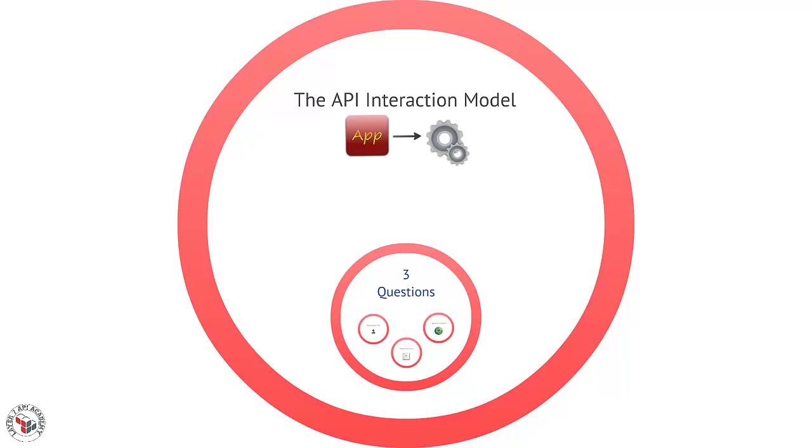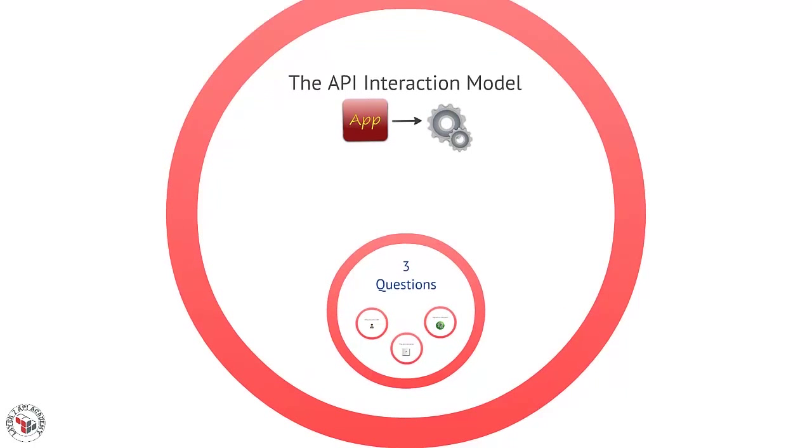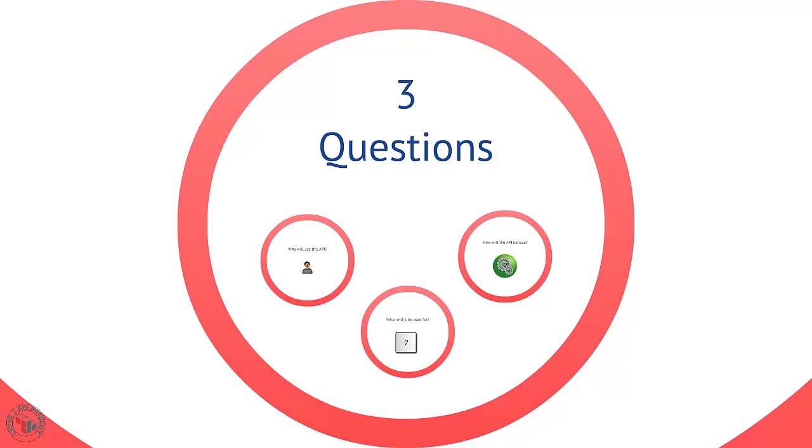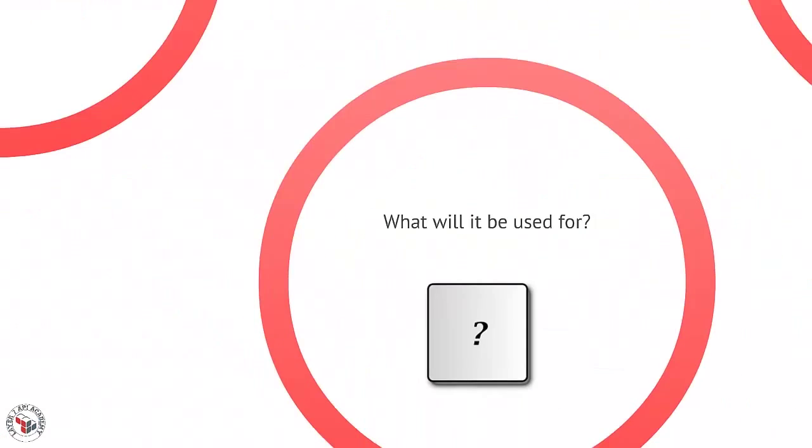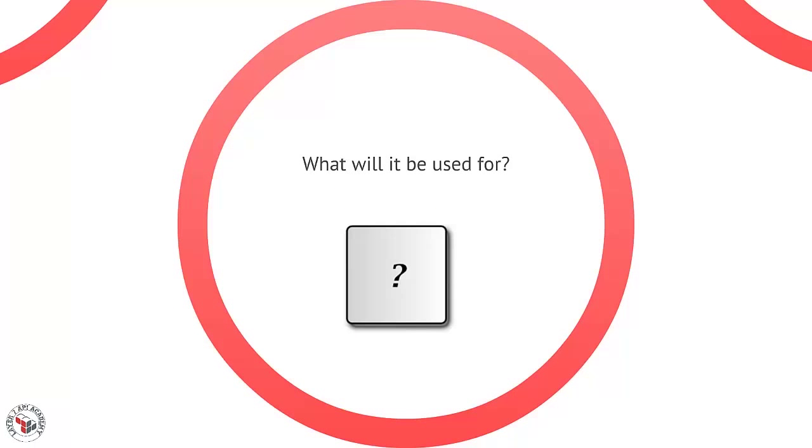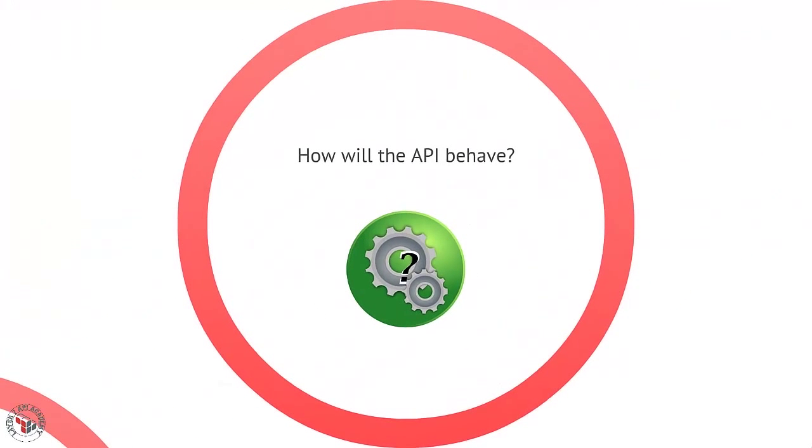To build an API interaction model, we need to ask ourselves three pretty simple questions. One, who will use this API? Second, what will it be used to create? And third, how will our API actually behave?